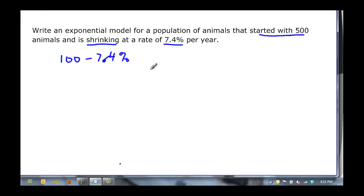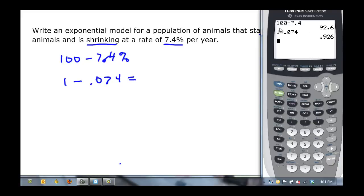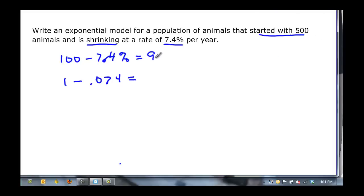Or we could think of it, we need a decimal that's less than 1 since it's shrinking. We could think of it as 1 minus the decimal, so 1 minus 0.074. Coming over to the calculator, we can see that 1 minus 0.074 is 0.926.